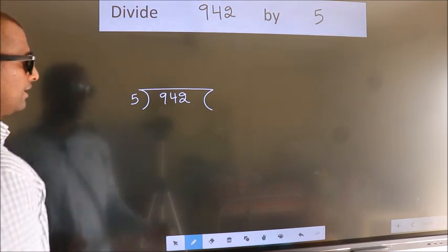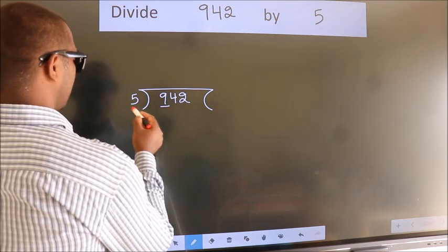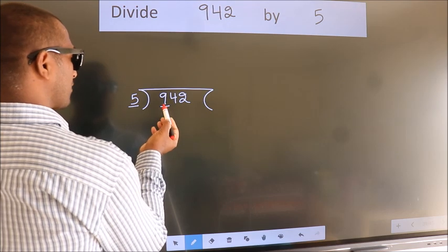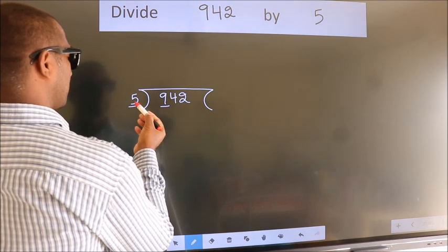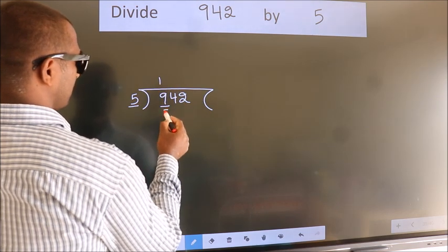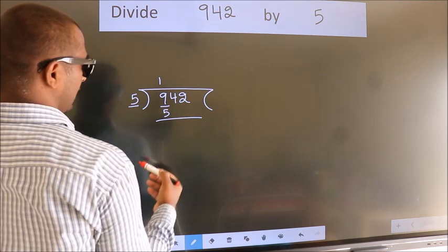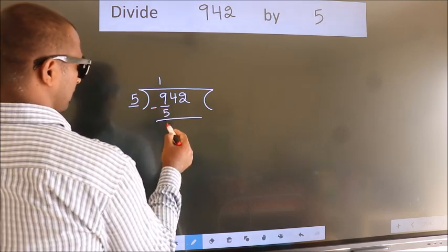Next, here we have 9, here 5. A number close to 9 in the 5 table is 5 once 5. Now we should subtract. We get 4.